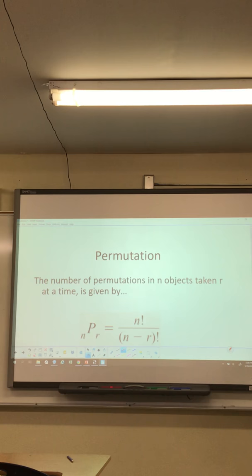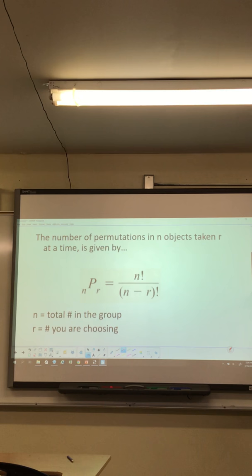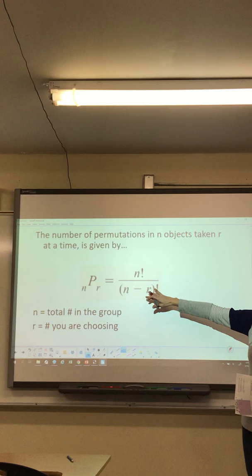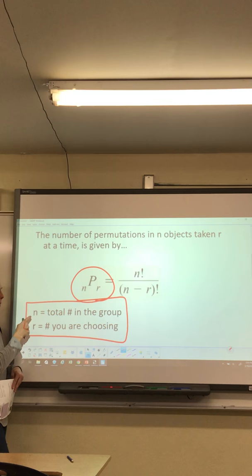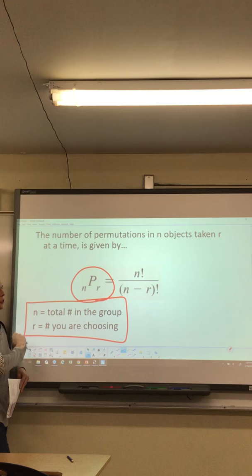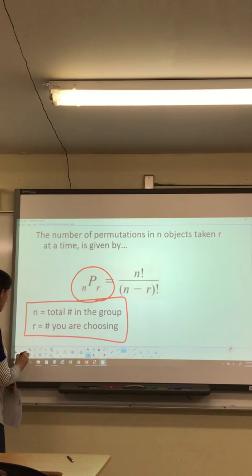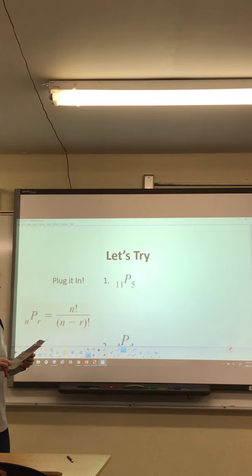The permutation formula: the number of permutations of n objects taken r at a time is given by the nPr formula. Your calculators actually compute this for you, so you just need to identify which value is n and which is r. N is your total number in the group; r is the number you are choosing. Make sure you know how to hit the probability button — or Math then probability on graphing calculators.